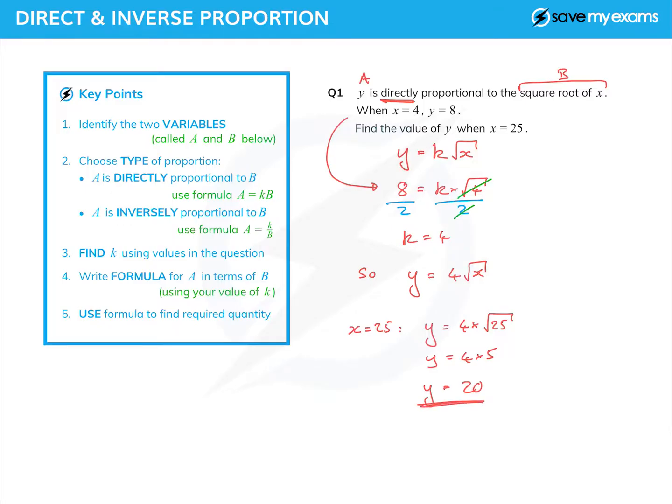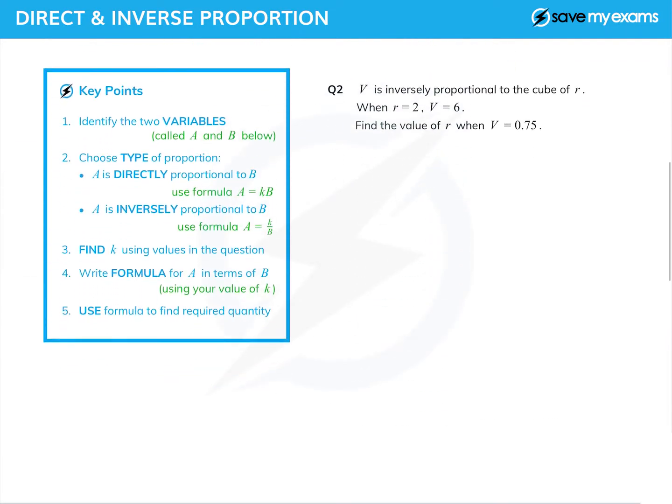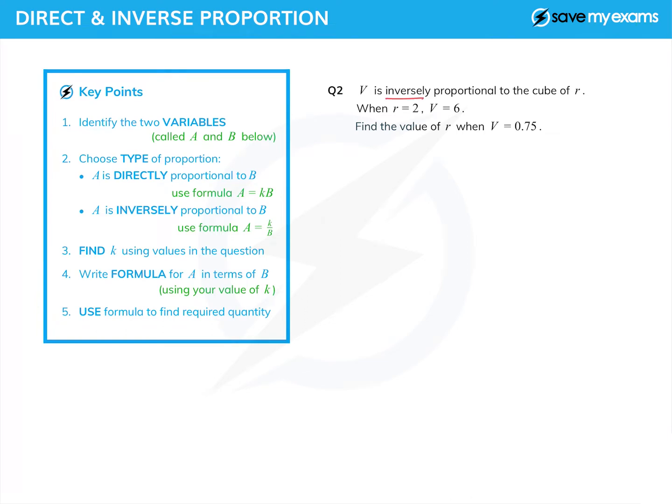Let's do another question. This one is inversely proportional this time. Our a and b are v and the cube of r - that's not the cube root of r but r cubed. We're given a pair of values and we're not asked for the formula, but we're going to find it anyway.